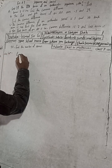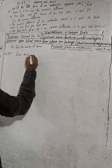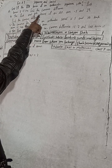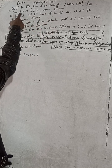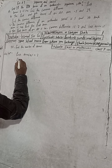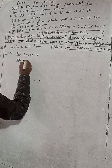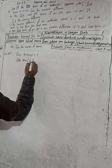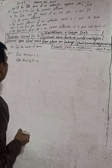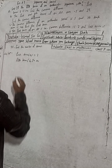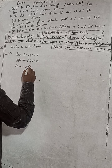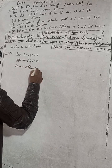Given: first term a = 2. The fifth term, indicated as T₅, is equal to 14. We need to find the common difference D.